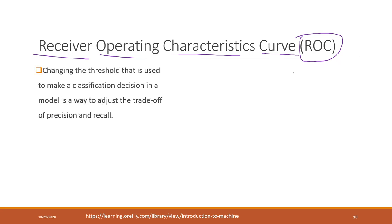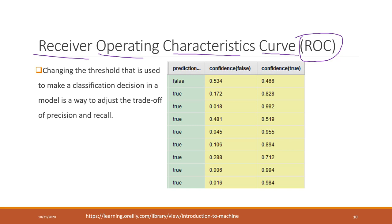When we make predictions, we predict whether the result is true or false by calculating the probability of belonging to each category. If the probability of being false is greater than 0.5, the result is predicted as false; if less than 0.5, it is predicted as true. So 0.5 is the default threshold in this case.